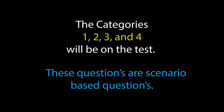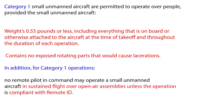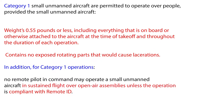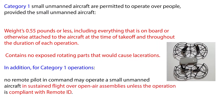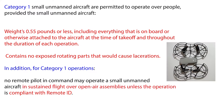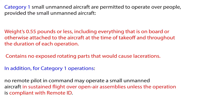So these are the categories: 1, 2, 3, and 4. Category 1: a small unmanned aircraft is permitted to operate over people provided it weighs 0.55 pounds or less, including everything on board or attached to the aircraft at takeoff and throughout the duration of each operation, and contains no exposed rotating parts that would cause lacerations. In addition, for Category 1 operations, no remote pilot in command may operate in sustained flight over open air assemblies unless the operation is compliant with Remote ID.